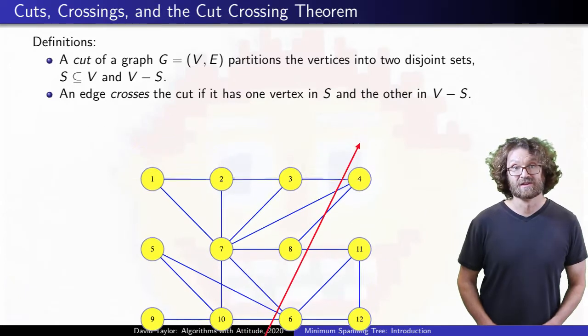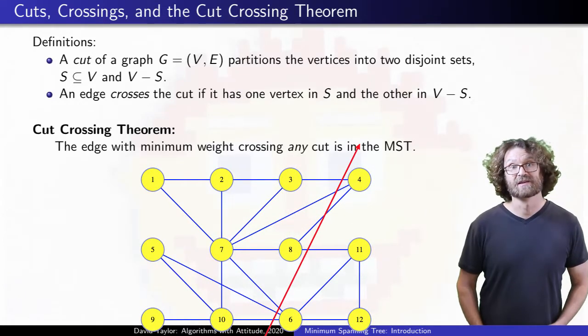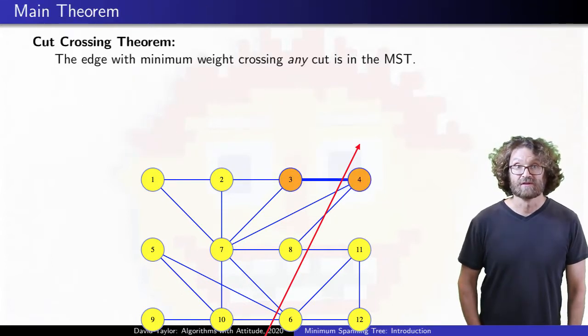Our main theorem is that the minimum weight edge crossing any cut is in the minimum spanning tree. In this example, if that is the edge between 3 and 4, how do we prove it?